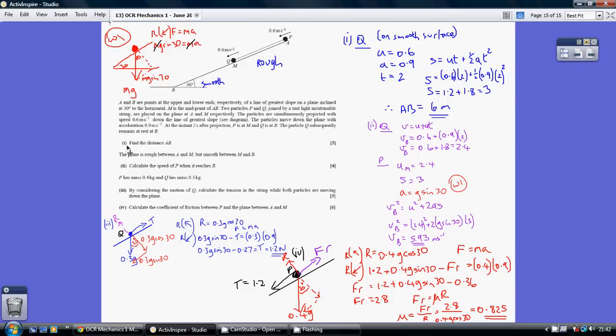For part 1 we're asked to work out the distance from a to b. Let's consider the journey of q. We know we've got an initial speed of 0.6, an acceleration of 0.9 and a t of 2. Using s equals ut plus half a t squared we can work out the distance to be 3 metres.